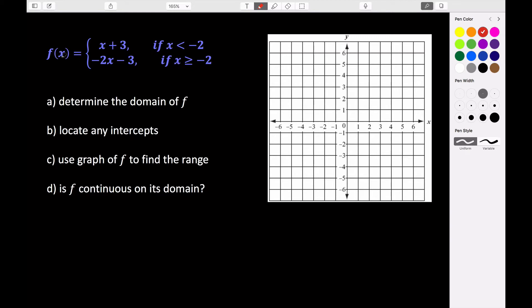So you can see for this function we have two lines, x plus 3 and negative 2x minus 3, that are defined on two different intervals. The top one is defined for values of x less than negative 2, and the bottom one is defined for values of x greater than or equal to negative 2.